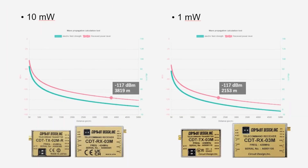The 426MHz version only has 1mW RF output compared to the 434MHz version's 10mW. Our calculation tools can be used to show the difference in range between the two. The tools are available on our website — the link is at the end of the video.